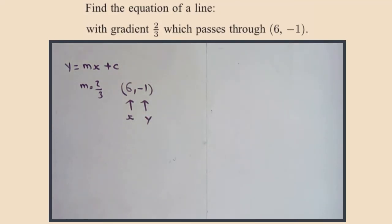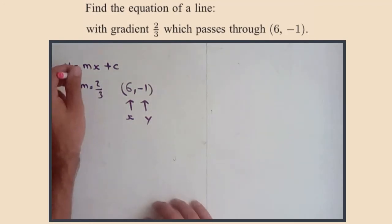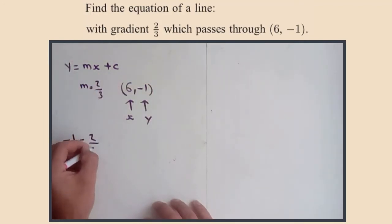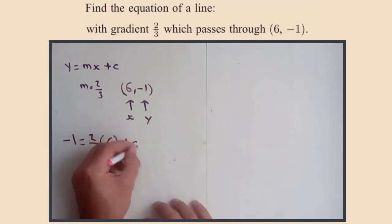So then we just substitute and hopefully we will be able to find c. If you think of y, m, x, and c, we have three of these things. We only need the one and then we'll be able to find the equation. So y equals mx plus c: minus one equals m, two-thirds, times six, plus c.